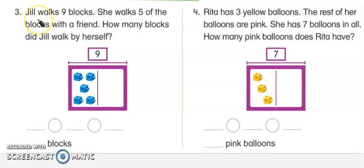So let's read it first. Jill walks nine blocks. She walks five of the blocks with a friend. How many blocks did Jill walk by herself? Right, so we have somebody that's walking and they walk some blocks with a friend, so there's a lot of things going on but let's read it again.